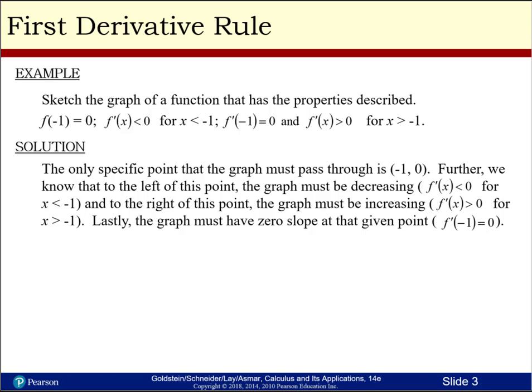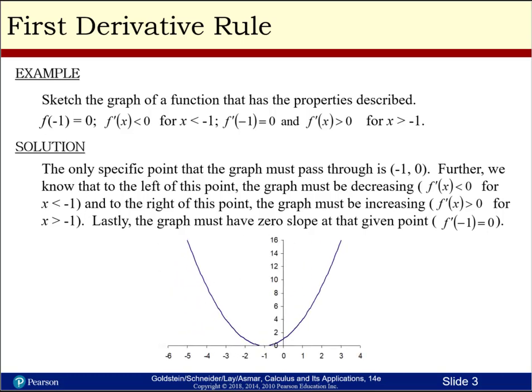The only specific point on the graph that we know is negative one, zero. We know that to the left of this point the graph must be decreasing — notice the graph is decreasing, we've drawn our dot right here. To the right of this point the graph is increasing, meaning the slope is positive. Lastly, the graph must have a zero slope at the given point, x equal negative one — it kind of flattens out right there.